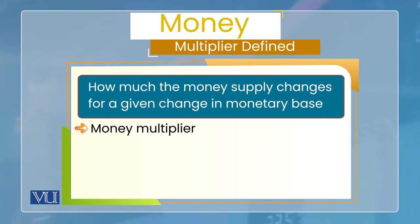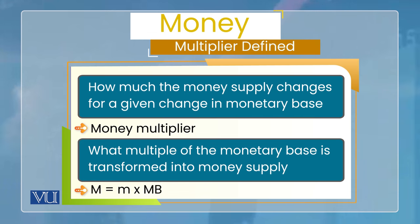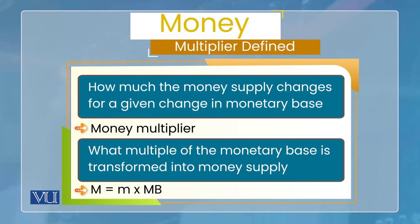اس کا مطلب یہ ہے کہ 'what multiple of the monetary base is transformed into money supply'۔ اس کے لیے equation دی ہوئی ہے: M which is money supply۔ جب M لکھا ہوا ہے تو اس کا مطلب ہے یہ M1 بھی ہو سکتا ہے یا M2 بھی ہو سکتا ہے — ہم اس وقت specify نہیں کر رہے، کیونکہ M1 لیں یا M2 لیں concept تو ایک ہی ہے: money supply۔